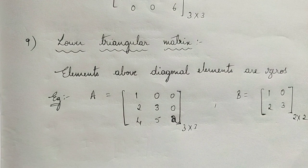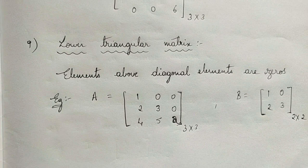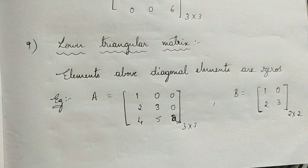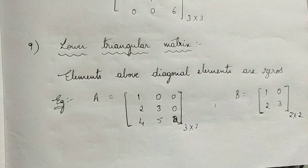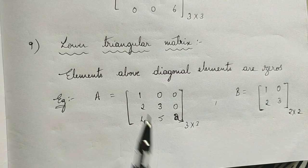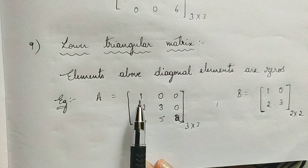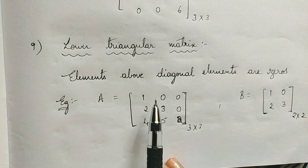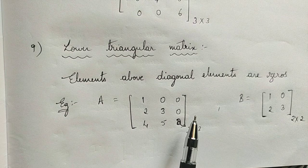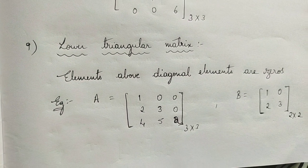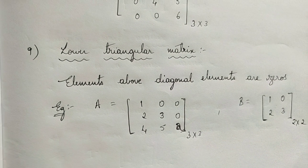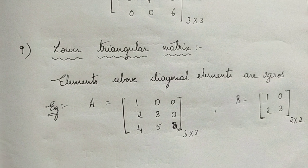What is a lower triangular matrix? The elements above the diagonal elements are zeros. As you can see, the elements above the diagonal elements are zeros. Such type of matrices are called lower triangular matrices. Thank you.